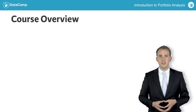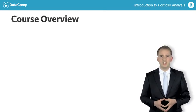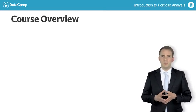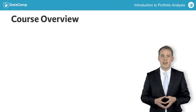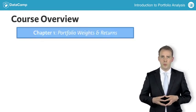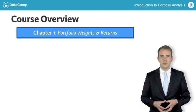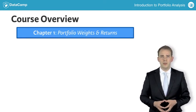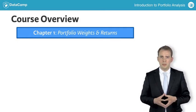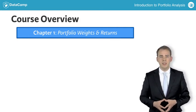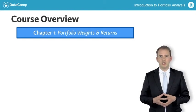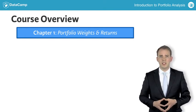The course proceeds in four chapters. In chapter 1, I will introduce the basic variables in portfolio analysis, namely the portfolio weights and the portfolio returns. The portfolio weights tell you the percentage of total value invested in each of the assets. The portfolio returns measure the relative increase in portfolio value over the period. I will show you how the portfolio weights and returns are connected and how to do the calculation.